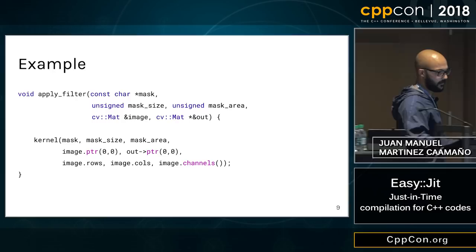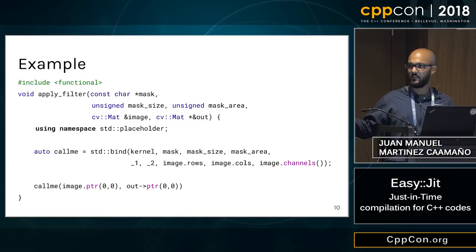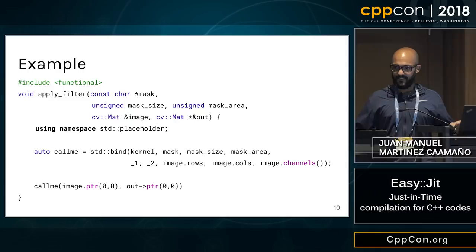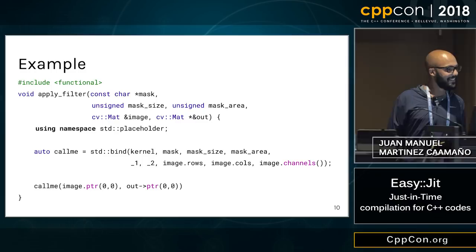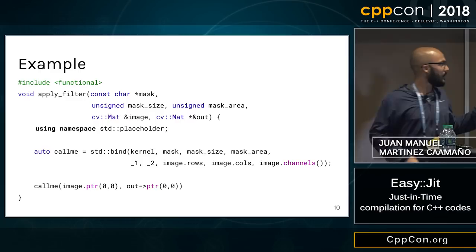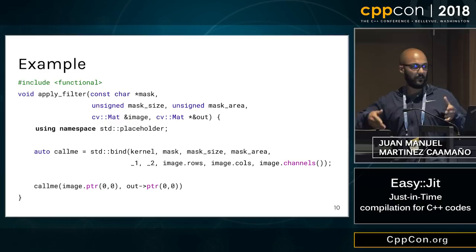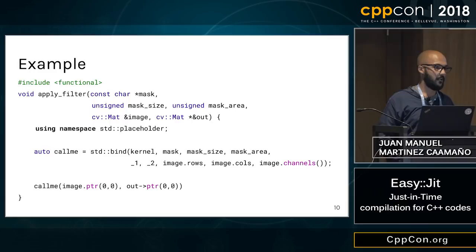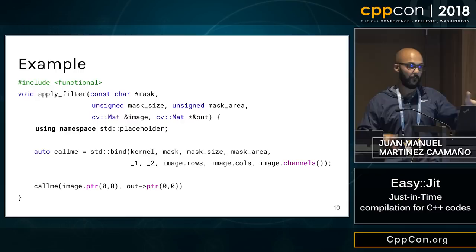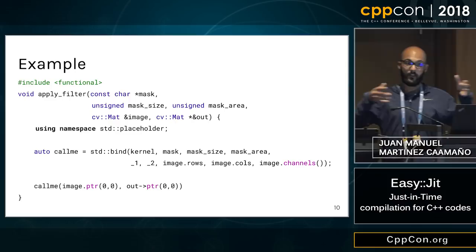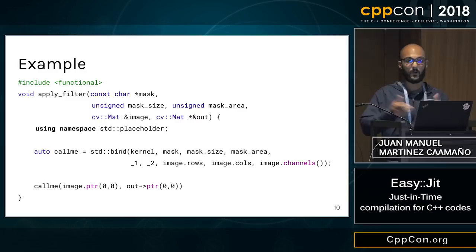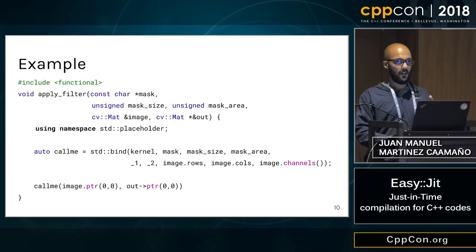Let's consider this invocation of the kernel function. Are you familiar with std::bind from C++? This function from the standard library returns a function object whose call operator will call the kernel function, passing mask, mask_size, and mask_area as the first, second, and third parameters. Then the first and second parameters of the call operator are forwarded as the fourth and fifth parameters of the kernel function, and so on for the rest. The result is a function object that we can call, equivalent to the previous code.